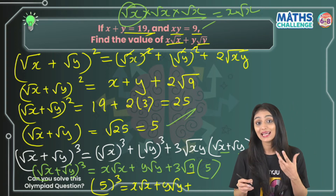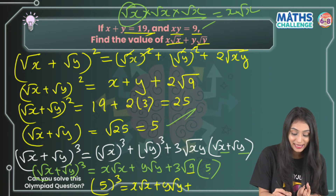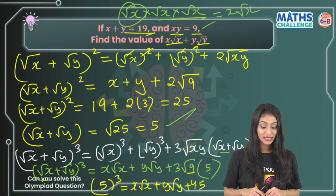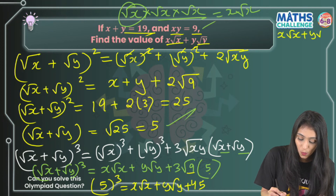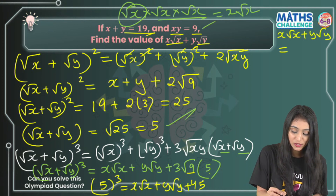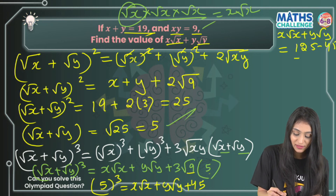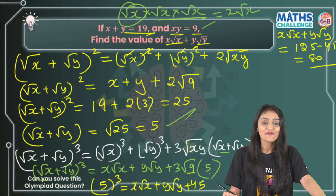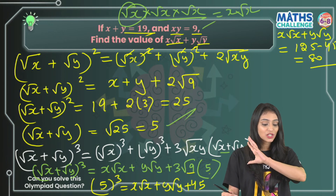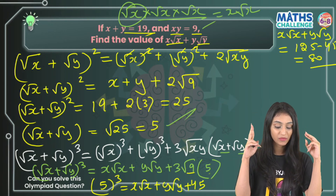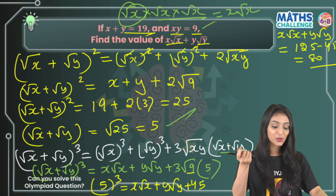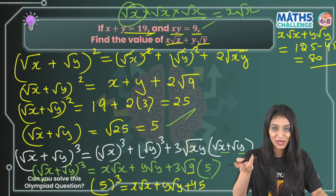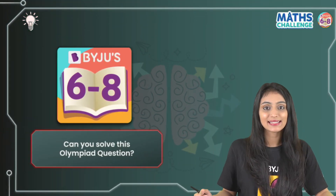5³ is 125, and 3 times 3 times 5 is 45. So x√x + y√y equals 125 minus 45, which gives us 80. So 80 is the final answer. We did not use any new concept — just the two basic algebraic identities, (a+b)² and (a+b)³. You can also try similar questions, and if you have any doubts, leave your comments in the comment section below.